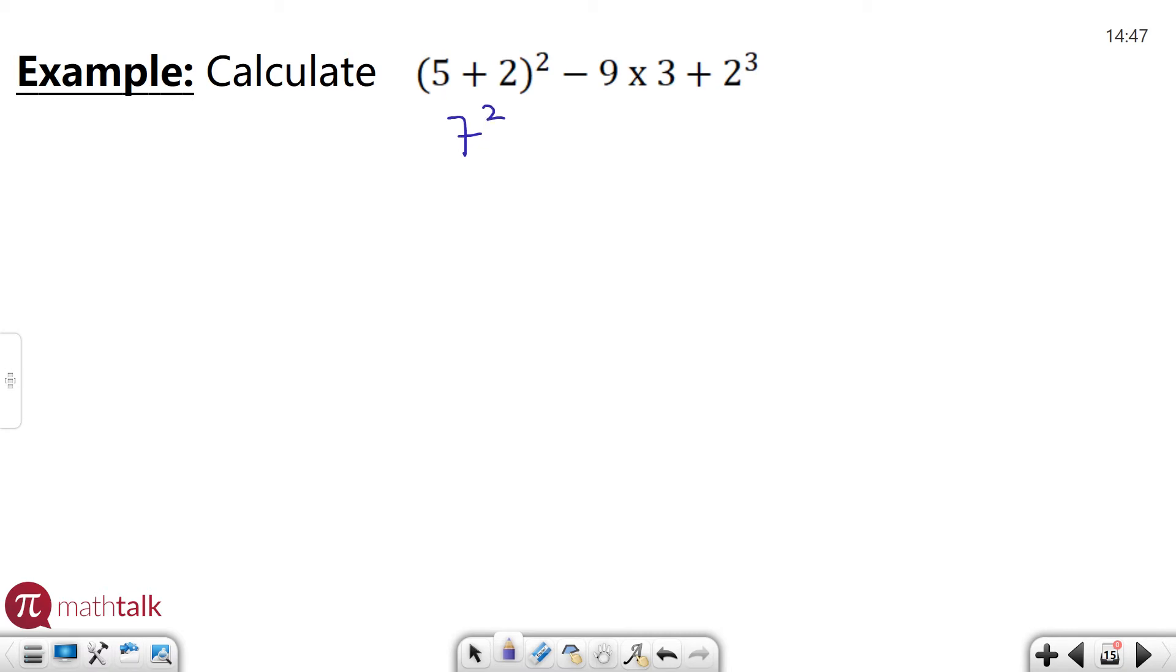Five plus two is seven inside parentheses. I'm going to keep that exponent of two. I'm going to write the rest of it out: nine times three plus two cubed. Because there's no more operations within the parentheses, I no longer need them and I'm going to do the rest of my order of operations. So next is exponents.